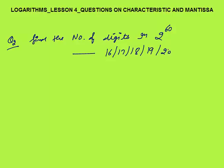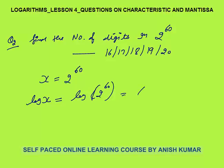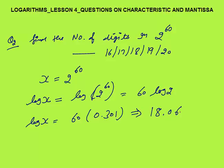Important question 2: find the number of digits in 2 raised to power 60. Don't try to calculate 2^60 directly. Let x = 2^60. Take log both sides: log x = log(2^60) = 60·log 2. We know log 2 = 0.301, so 60 × 0.301 = 18.06.